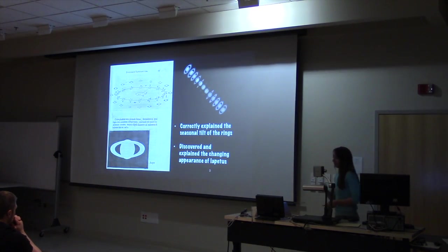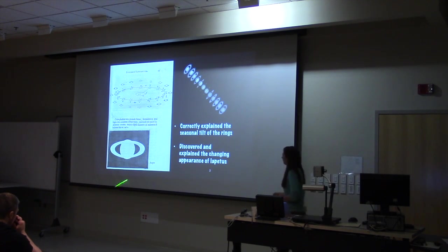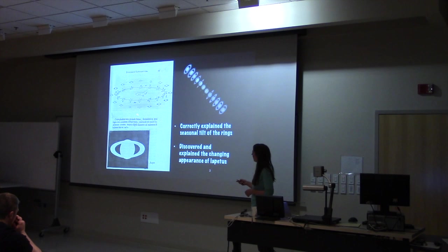Just to give you some idea about what the observations look like that these two men made, this is some data from Cassini. Saturn orbits the Sun every 29 years, so that's quite a long year for Saturn. But because of that long orbit, when you look at Saturn over different times of its orbit, you see the rings differently.